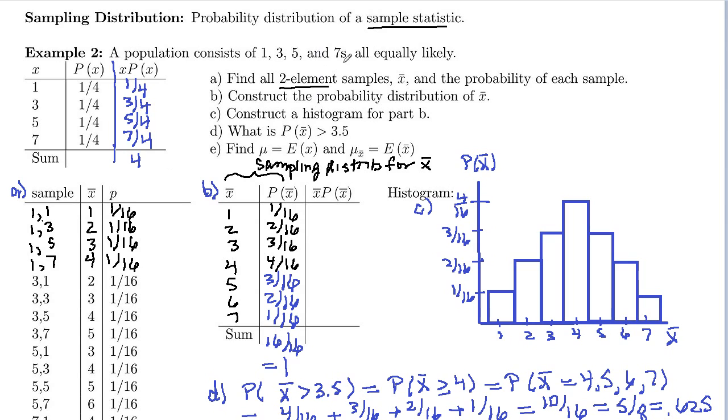And in fact, if these guys are equally likely, if you take and add 1 plus 3 plus 5 plus 7, and divide by 4, you should get the same thing. And in fact, this is 16 divided by 4, which is 4. So the mean of the original distribution is 4.